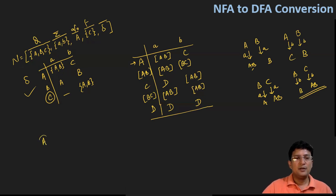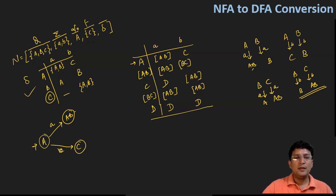Now let's draw the DFA for this. A is the start state. On getting symbol small a, you move to the AB state. AB on small a remains at this state, and AB on b goes to the new state BC.